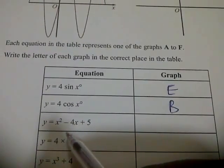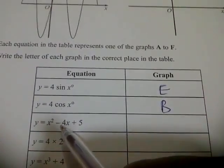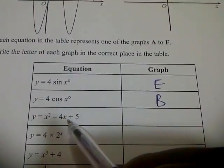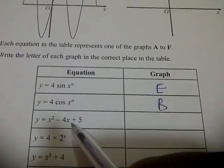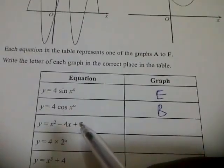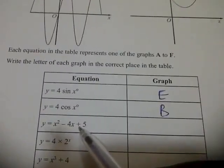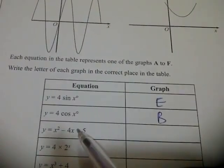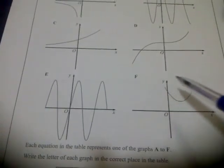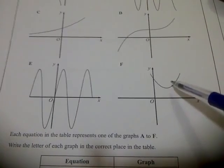Okay, the third one is y equals x squared minus 4x plus 5. From here it will show you that it's a quadratic one, so you look for a quadratic kind of graph. F, okay, this is not it, this is not it. This is more like it, so F would be the better option, the best option.